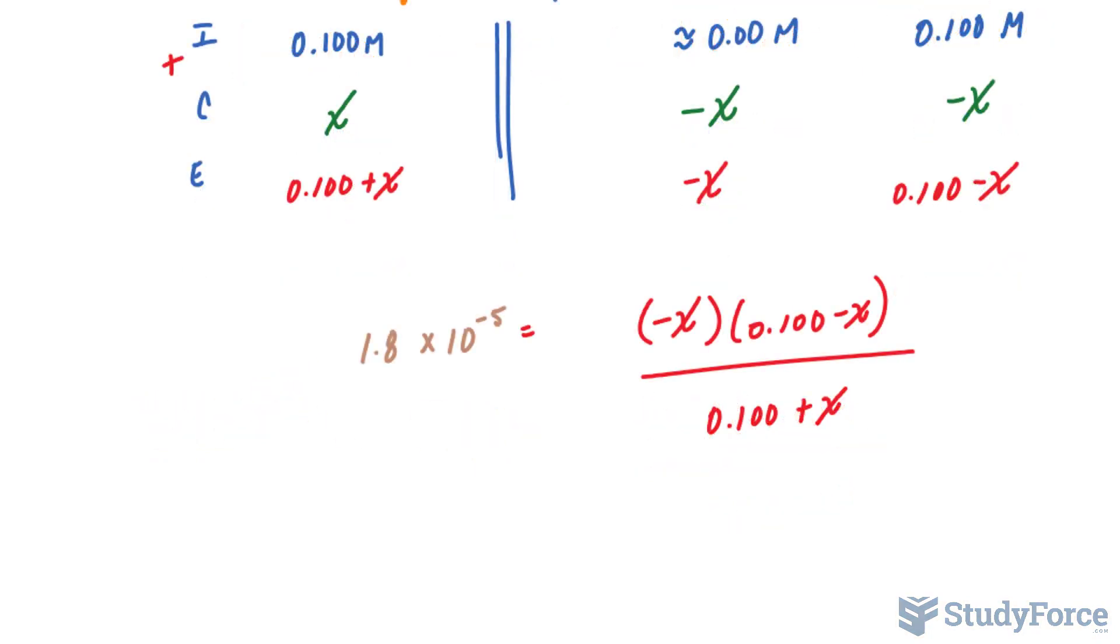Now normally, to solve such an equation, you would need the quadratic formula. But since our Ka value is so small, there's a little trick that you can use. It turns out that if this number is very small, you can eliminate in the equation where you see plus x and minus x. So with that said, we can safely remove this minus x and this plus x. You can't remove this one because that's not being added or subtracted to anything. By doing this, it actually makes the solving process very simple.